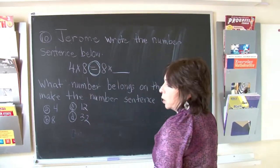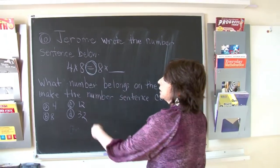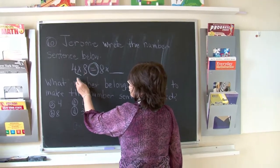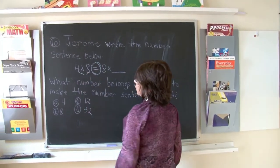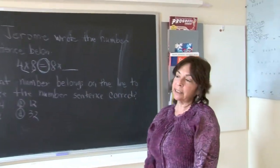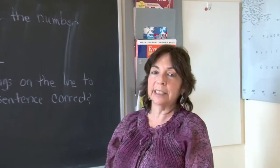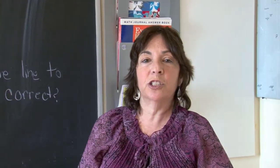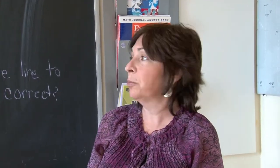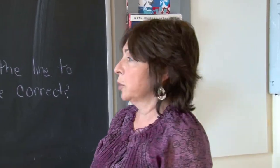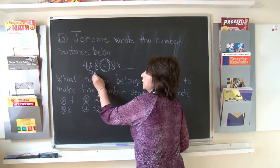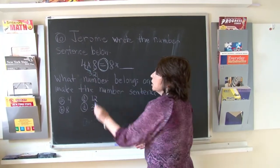So we should all know 4 times 8 is 32. A quick way to do that — I do it in my head: 8 and 8 is 16, and 16 and 16 is 32. Any way you can memorize the multiplication tables is fine.